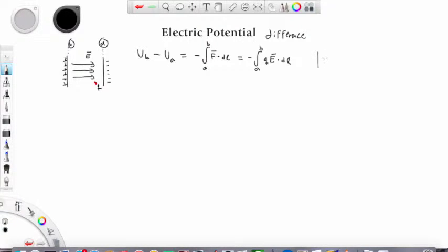Now if we divide both sides by the test charge, we get the following expression: UB divided by Q minus UA over Q, and then the integral over the electric field. These terms here are called electric potentials. All of them. These can be expressed by symbol V. For example, electric potential at point B minus electric potential at point A, and then the integral.